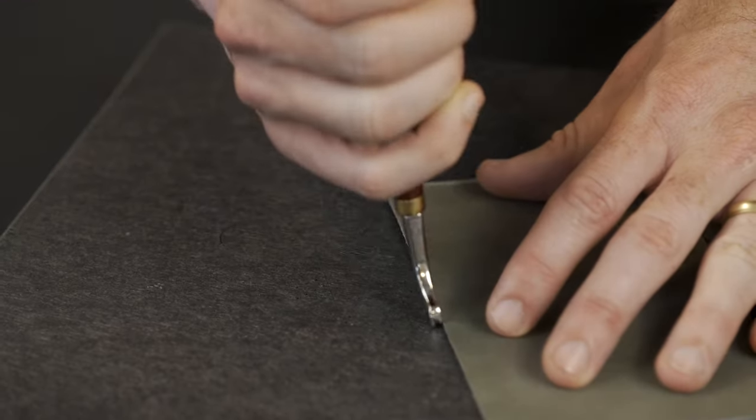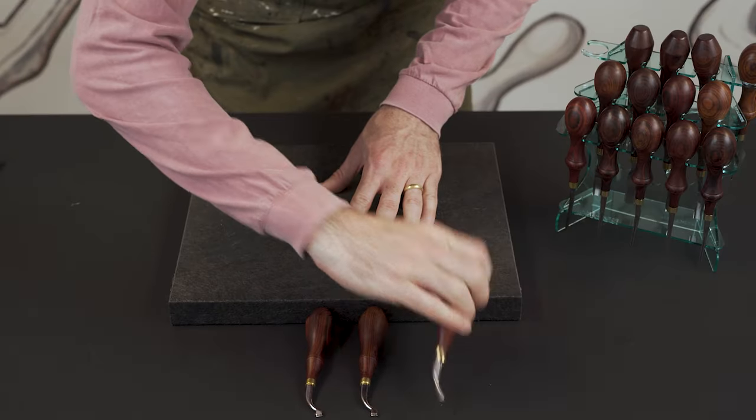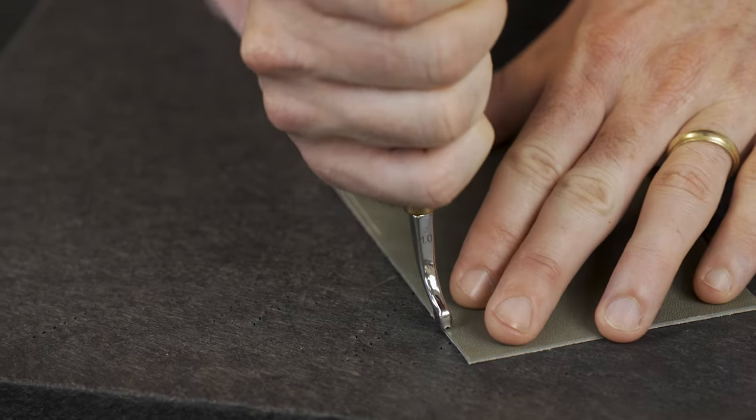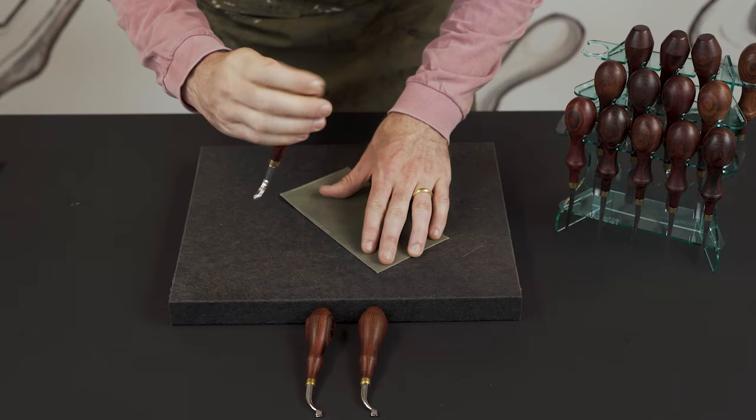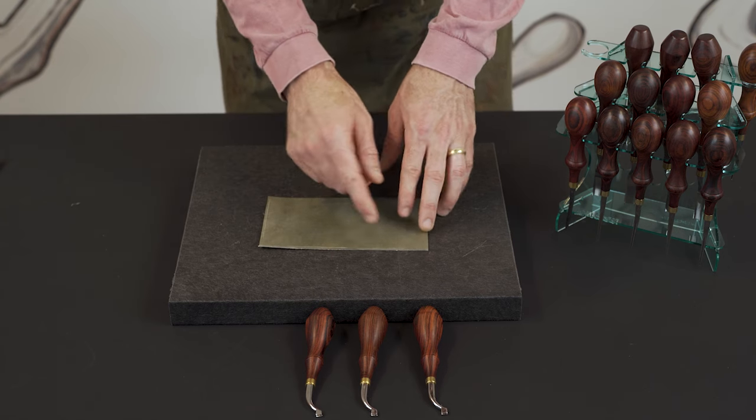The 1.5mm is a little bit closer and your 1mm is right up to the edge. So you can use these fixed edge creasers for decorative lines or you can also use them for stitch lines.